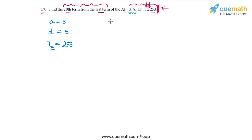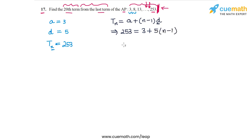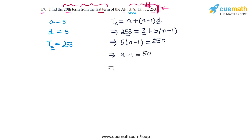Applying the relationship T_N = A + (N−1)D, we plug in the values: T_N is 253, A is 3, and D is 5. So 3 + 5(N−1) = 253, which gives 5(N−1) = 250. Dividing both sides by 5, N−1 = 50, so N = 51.